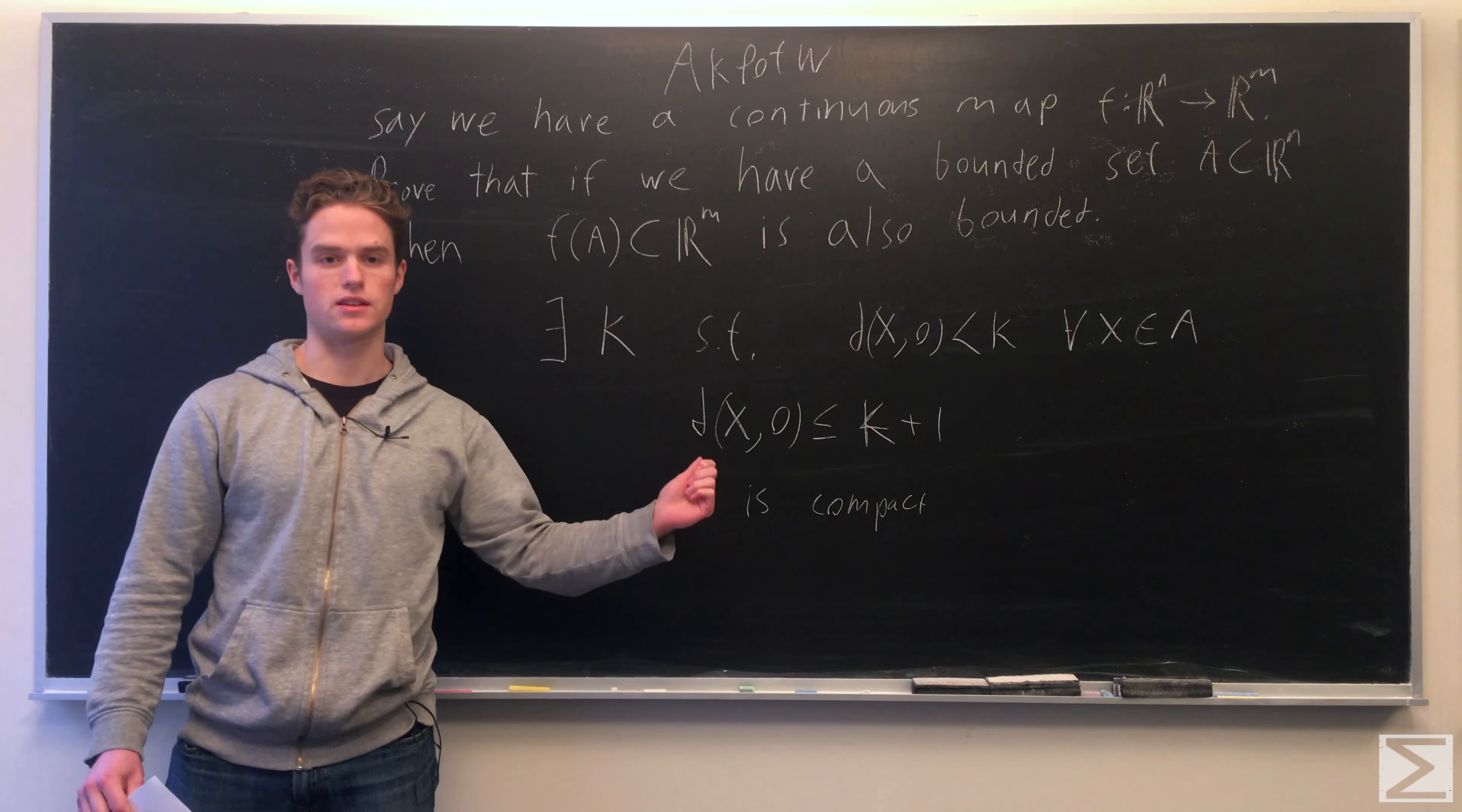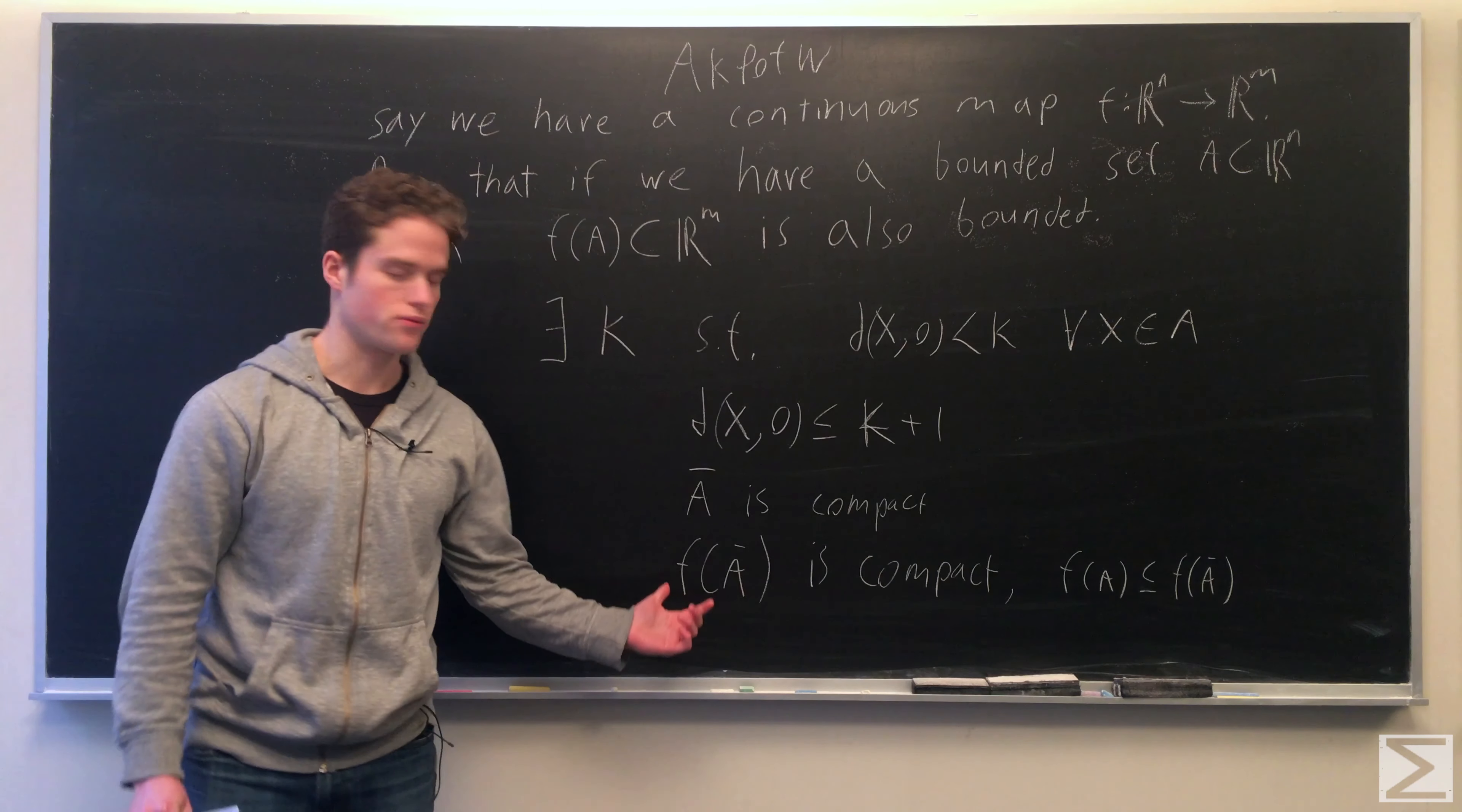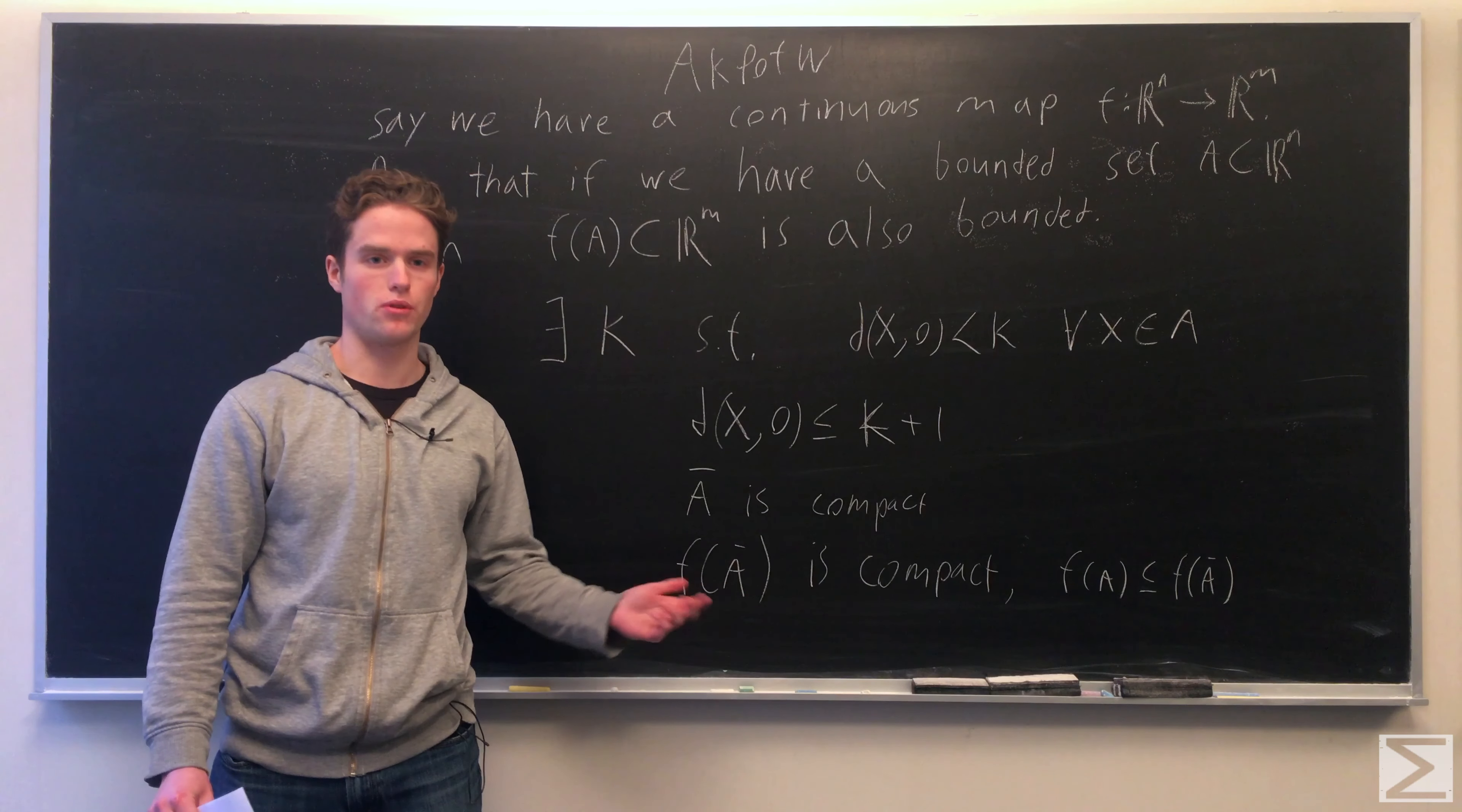By another common theorem, the continuous image of a compact set must be compact. So F(A-bar) is also compact. Since the closure of A contains all the points of A, the image of the closure of A must also contain the image of A.